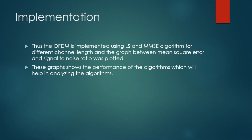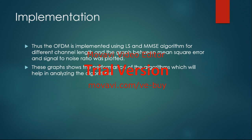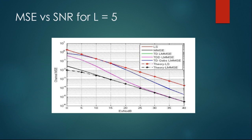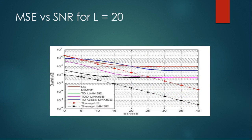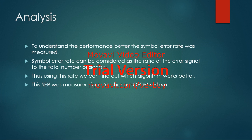I have written code to implement the LS algorithm, and also used code available online to implement the LS and MMSE algorithms. The graph that follows shows the ratio of SNR versus MSE for different channel lengths. The channel length is taken as pi, 20, and 40 respectively. From this we can see that MMSE has better performance when compared to LS.